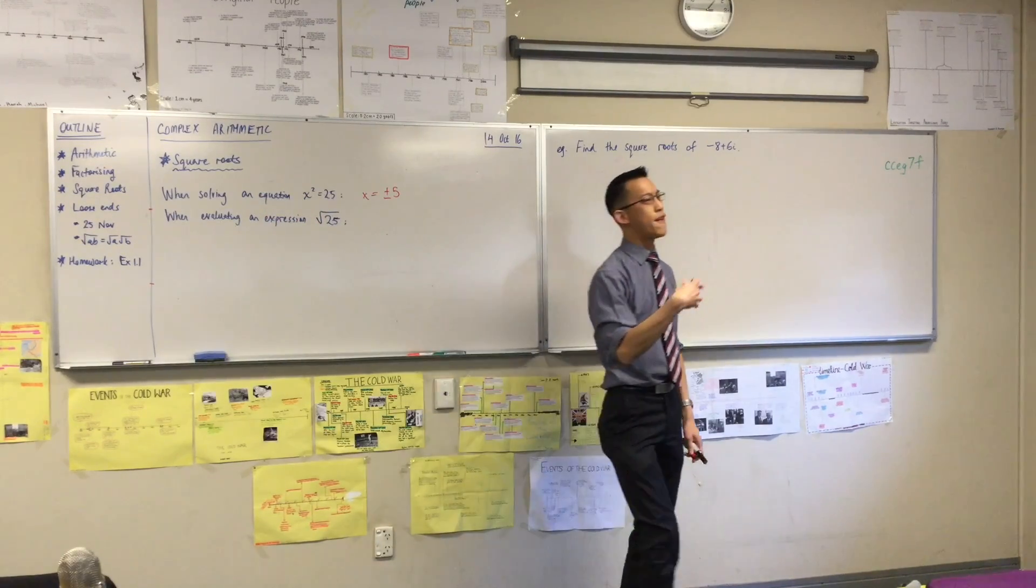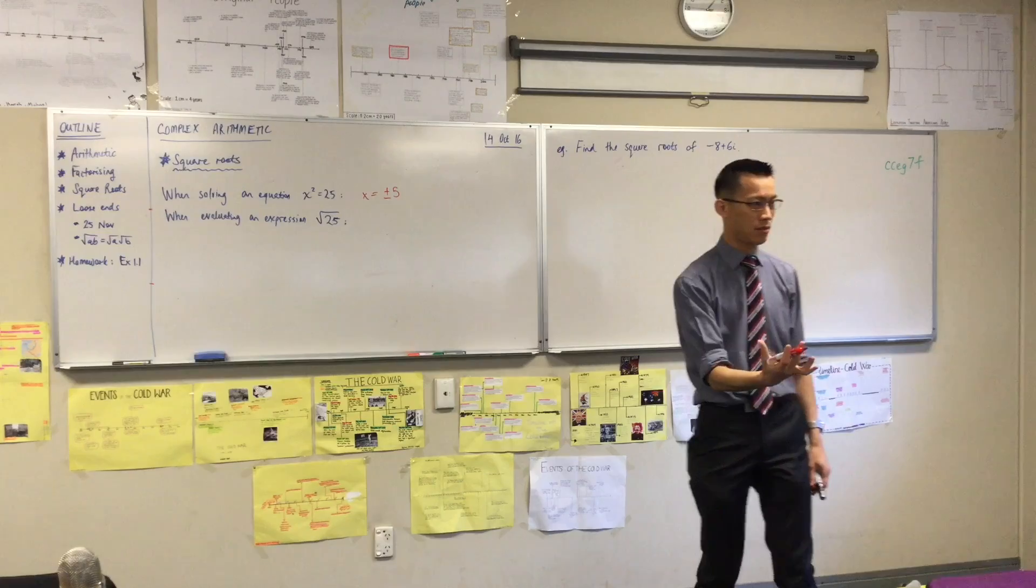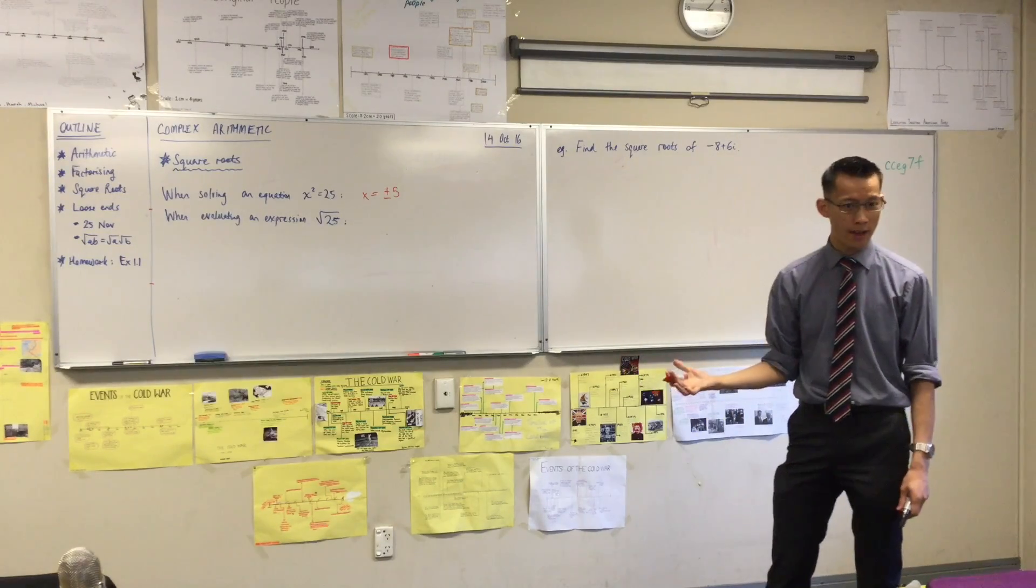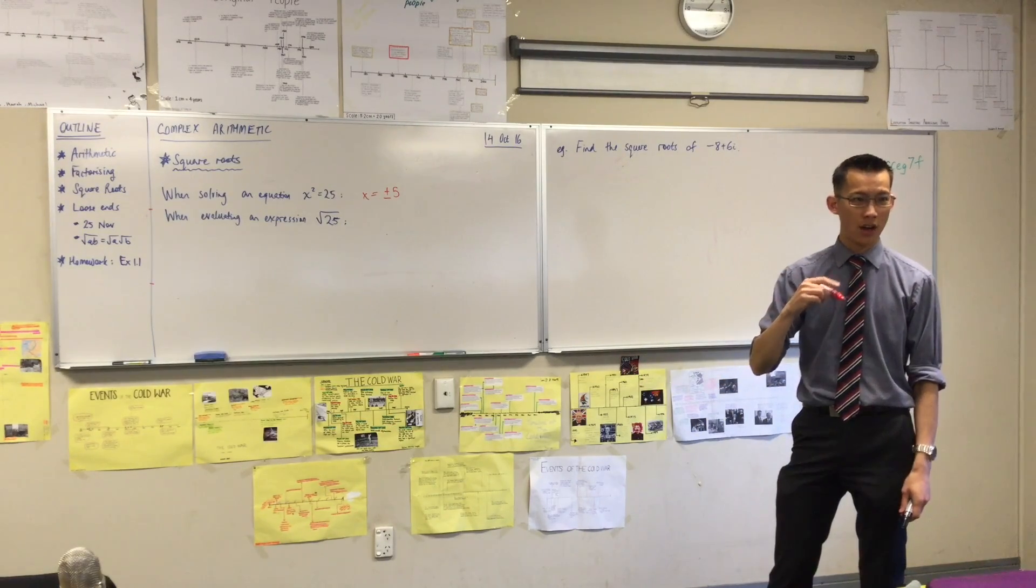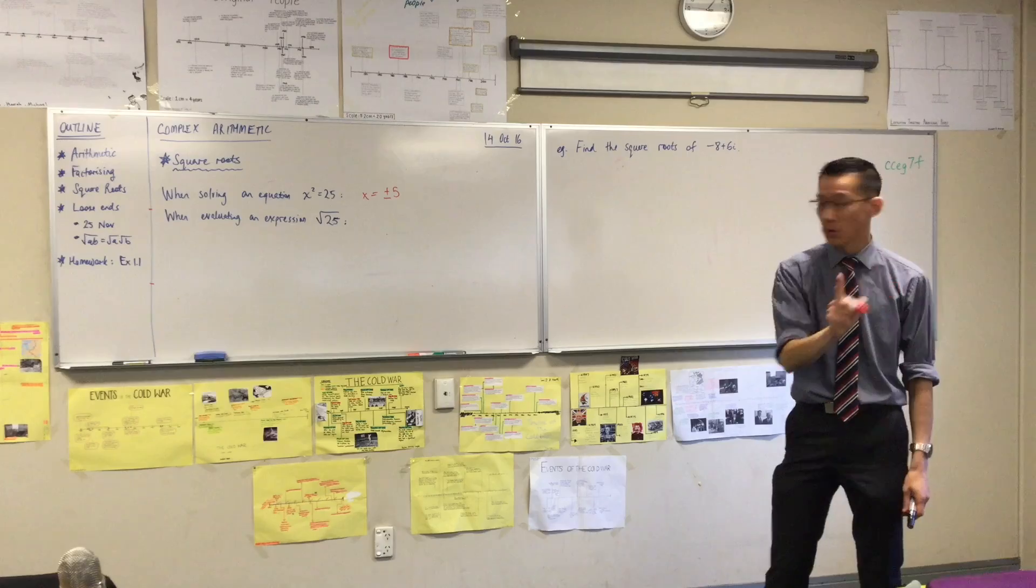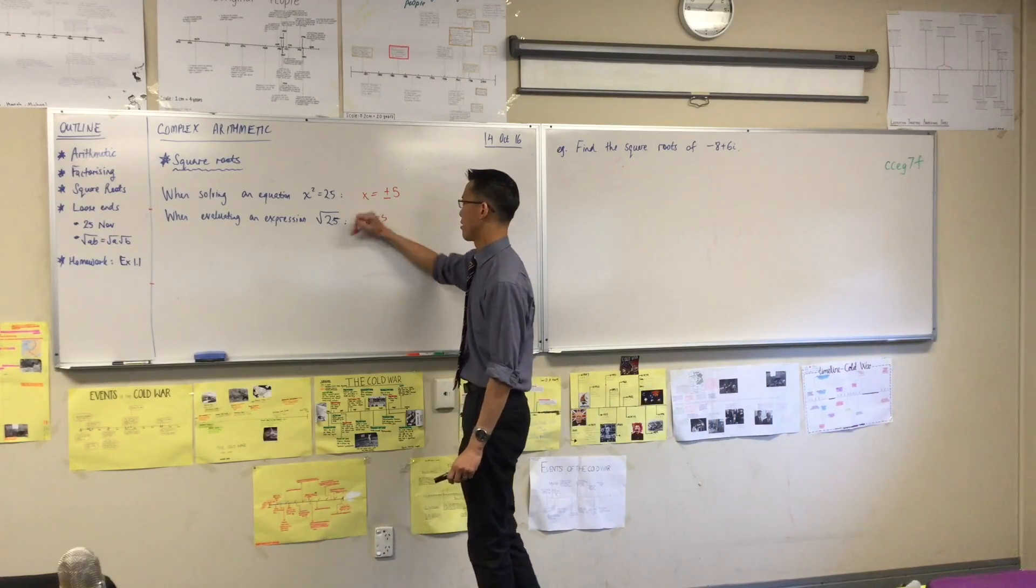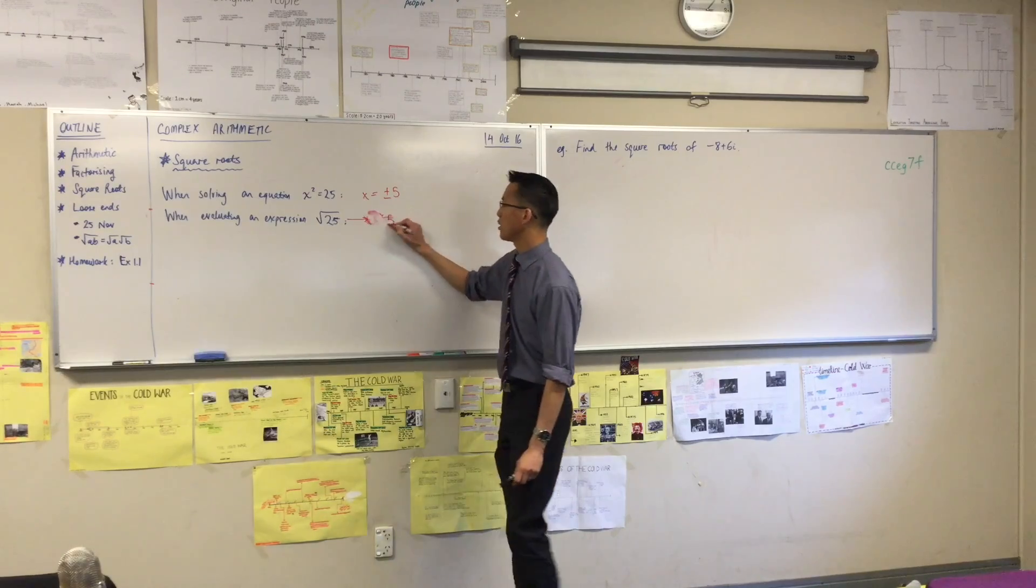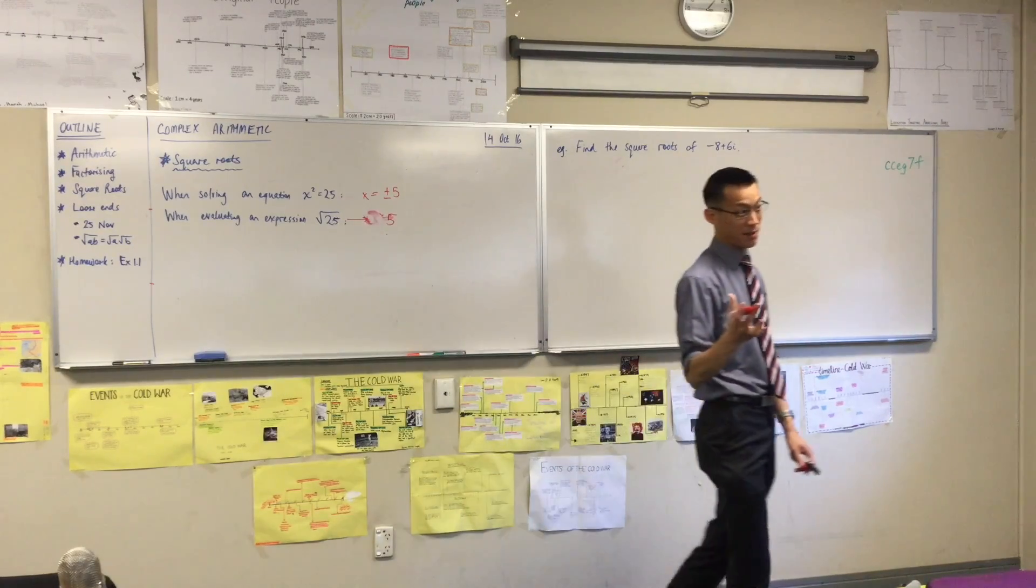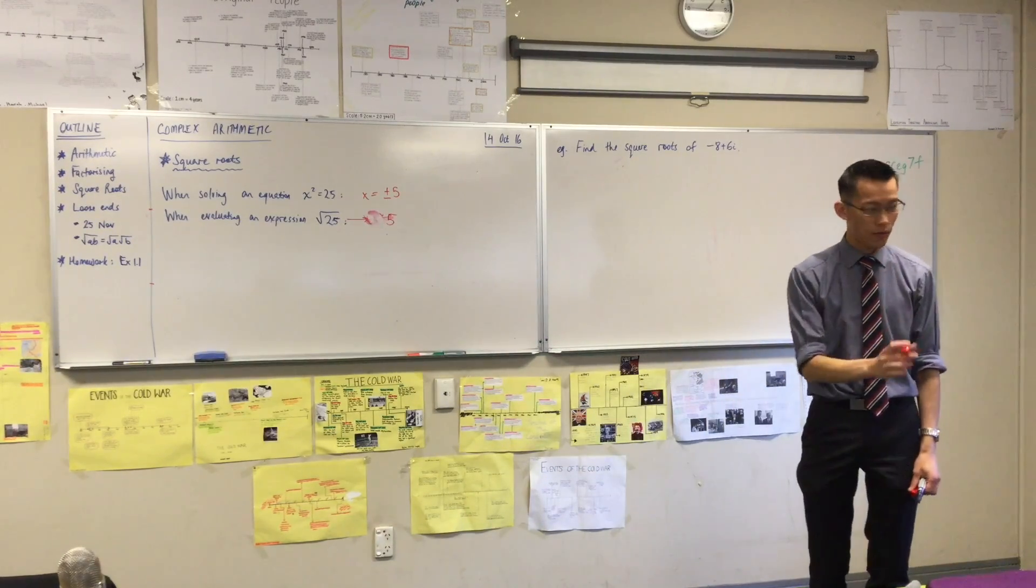But if you're asked to evaluate an expression, like root 25, you know in fact there's only one value, right? There's not two values for root 25. There's only one. This number is only five, right? It's not like, oh, sometimes it's negative five. No, no, no. It's only five.